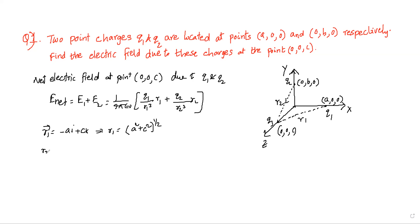Now R2 vector is equal to -Bj + Ck. So R2 is equal to (B² + C²)^(1/2).